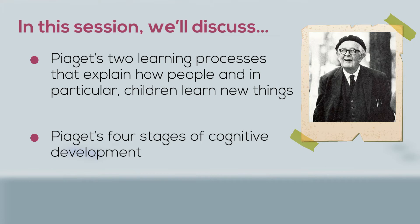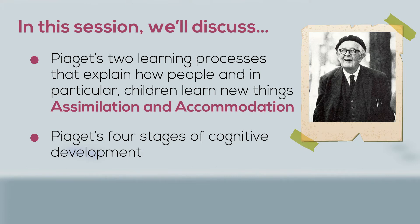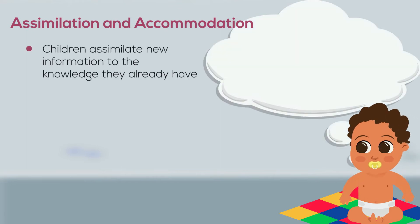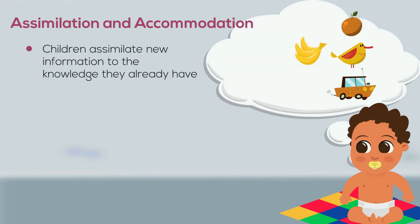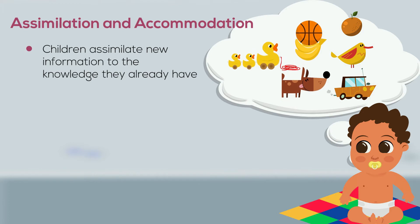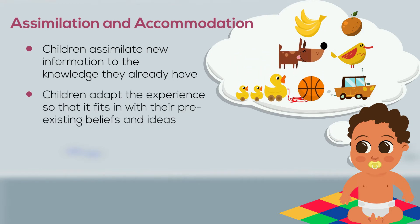The psychologist Jean Piaget has suggested that children gain new knowledge through two processes: assimilation and accommodation. He believed that in early childhood, children assimilate new information to the knowledge they already have. As children come across new experiences and continue to interpret the information they discover, they adapt the experience so that it fits in with their pre-existing beliefs and ideas.